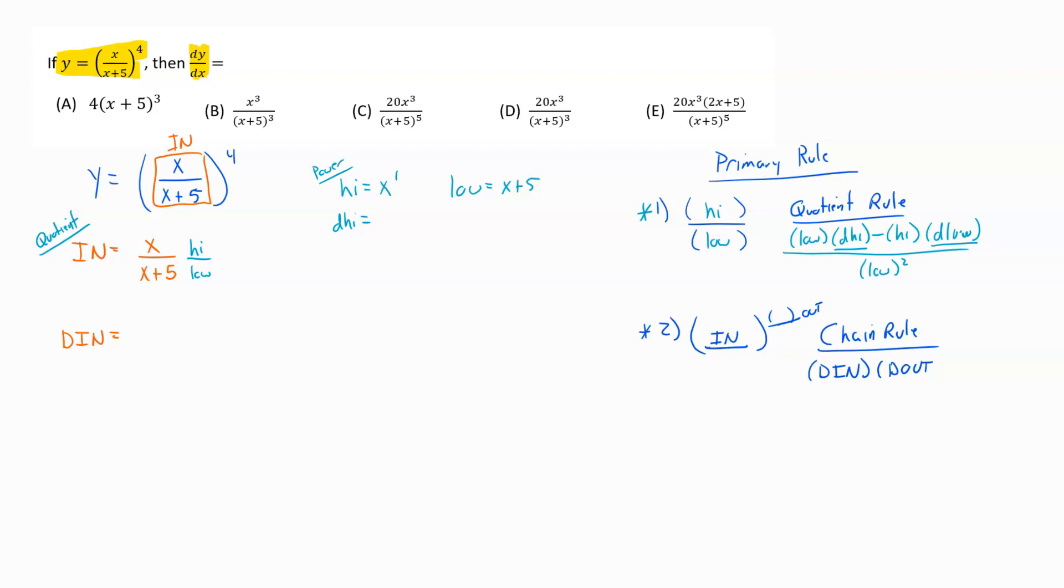That's just going to be our standard power rule. The power rule says bring the power down, subtract 1 from the power. If I bring that 1 down, that gets me a 1 up in front. Technically I'd get x to the 0, but anything to the 0 power is just 1. So the derivative of x would just be 1.